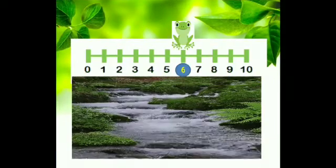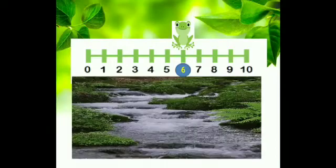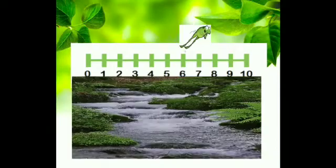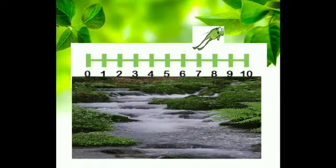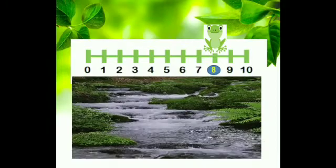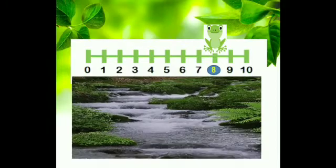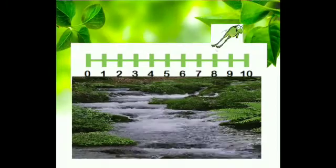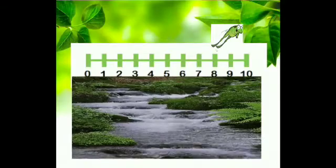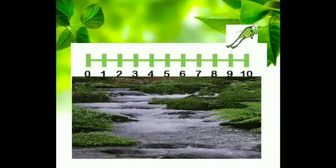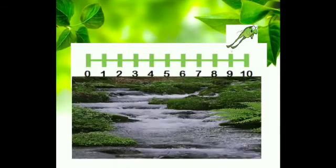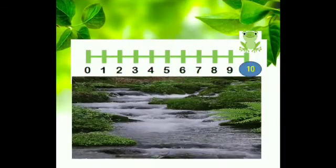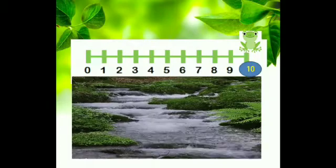Now he jumped two times — one, two — and he reached number eight. Now again Frankie jumped two times — one, two — and Frankie reached the other side of the river.